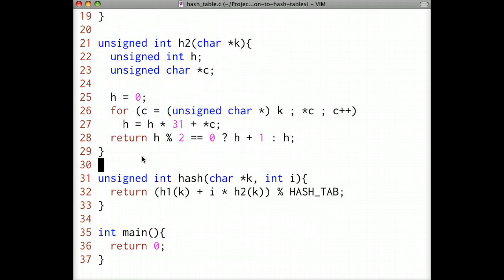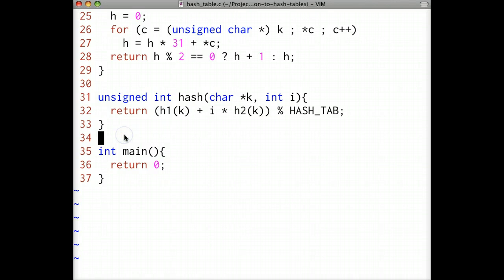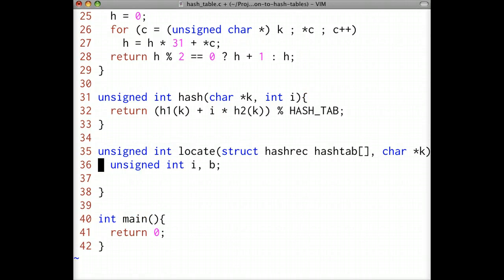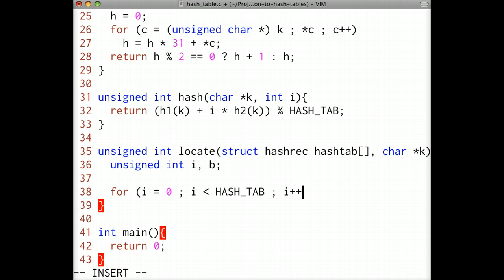Now we'll implement two operations on our hash table: insert and member. Insert will insert a new record into the hash table and member will test if a certain key resides in the hash table. To make the implementation of both the insertion and member functions easier, we're first going to implement a helper function named locate. The locate function will help us by returning the index of the bucket associated with a given key, if it exists in our hash table.